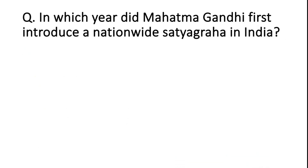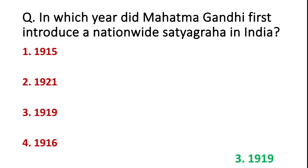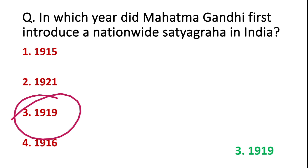In which year did Mahatma Gandhi first introduce a nationwide satyagraha in India? Options: 1915, 1921, 1919, or 1916. In 1915 he returned to India; in 1916 the Sabarmati Ashram was established; in 1921 the Non-Cooperation Movement was ongoing. But the first nationwide satyagraha by Mahatma Gandhi was in 1919 — the Champaran Satyagraha. The correct answer is 1919.